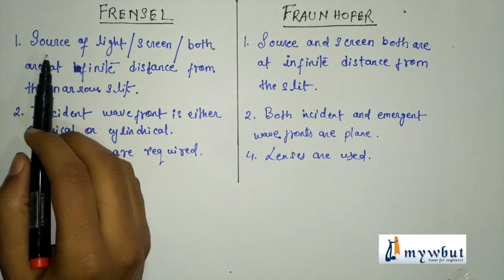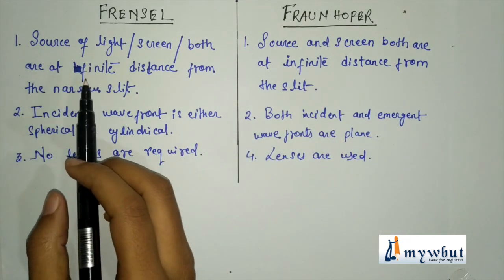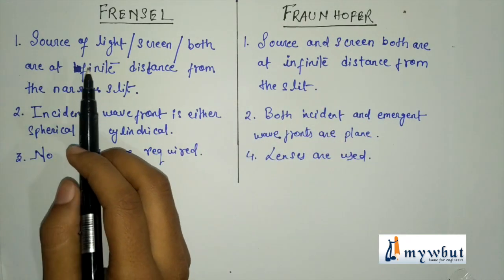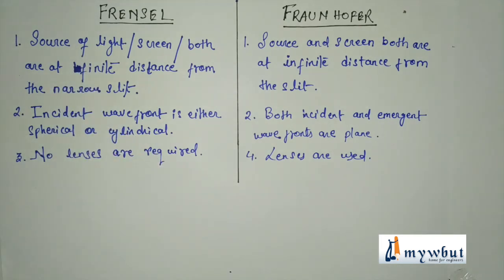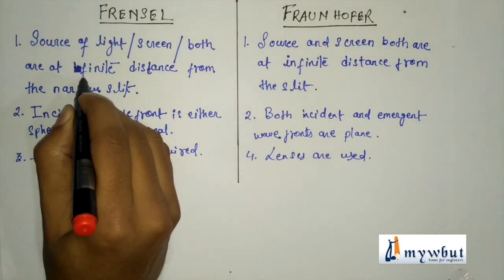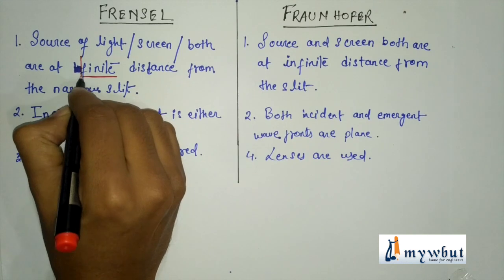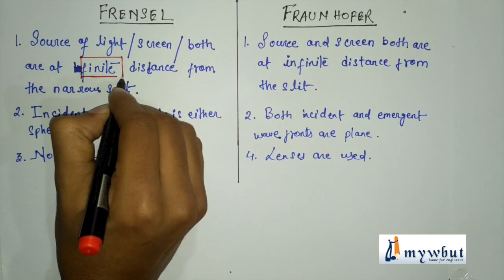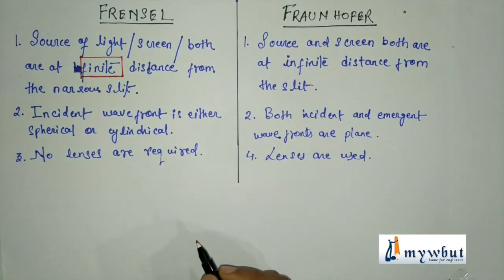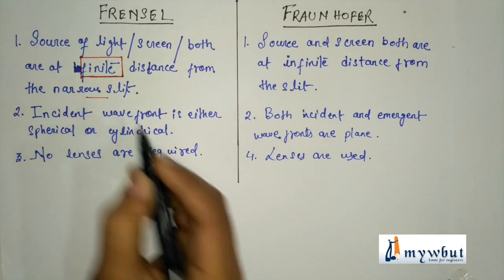So let us give a quick revision of what these diffractions are. In Fresnel diffraction, the source of light, the screen, or both the source and the screen are at a finite distance from the narrow slit or edge.